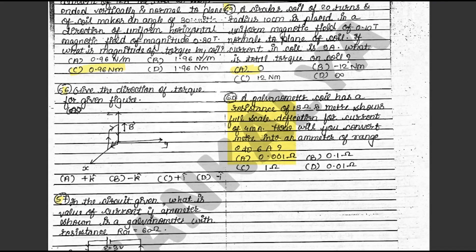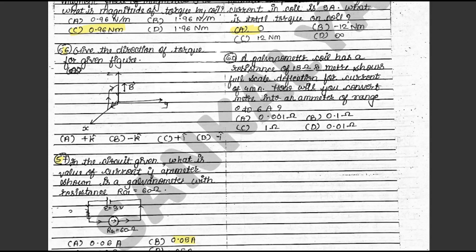Question 60: A galvanometer coil has a resistance of 15 ohm and the meter shows full scale deflection for a current of 4 milliampere. How will you convert the meter into an ammeter of range 0 to 6 ampere? The answer is D: 0.01 ohm. This is in textbook exercise 28.